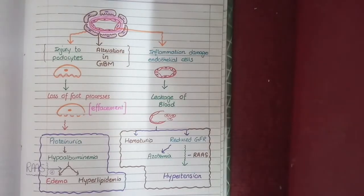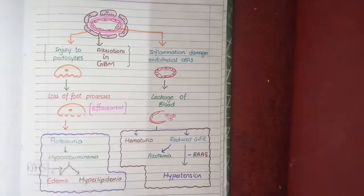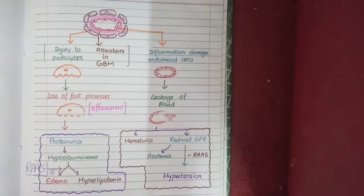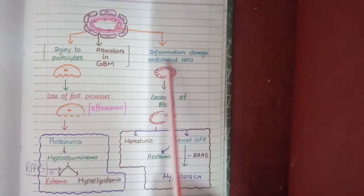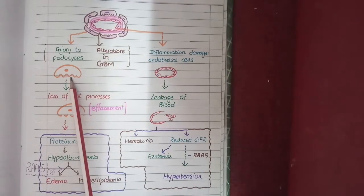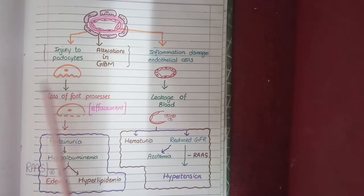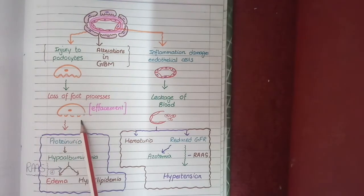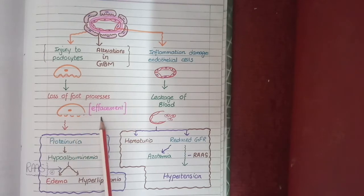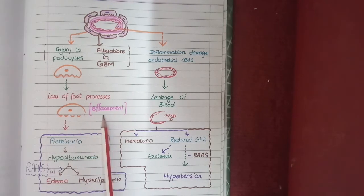Based on this diagram we can divide glomerular injuries into two types: first is injury to podocytes, and second is injury to endothelial cells. Injury to podocytes leads to loss of foot processes, which causes flattening of foot processes known as effacement of foot processes.